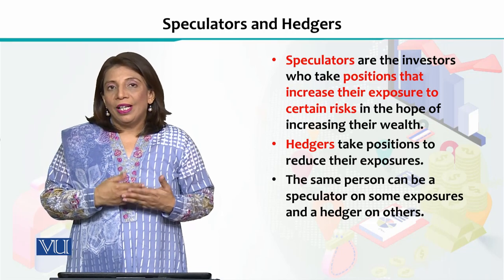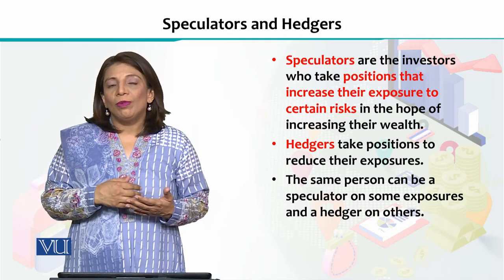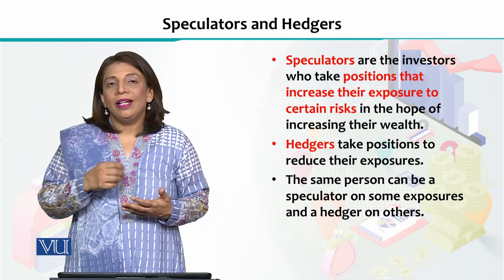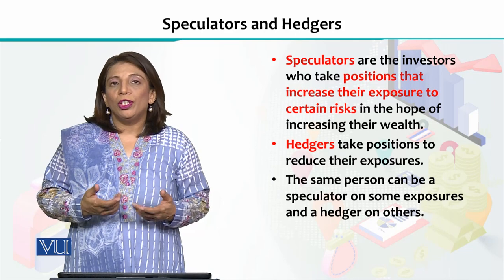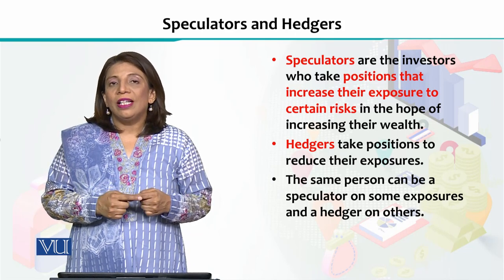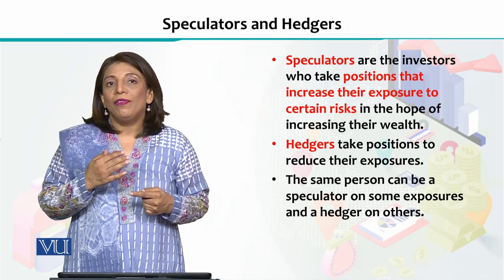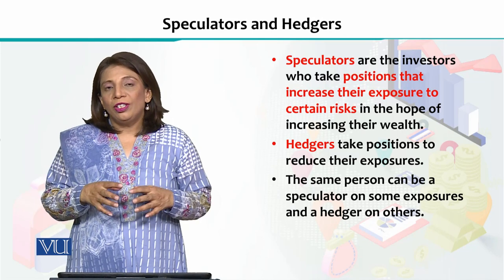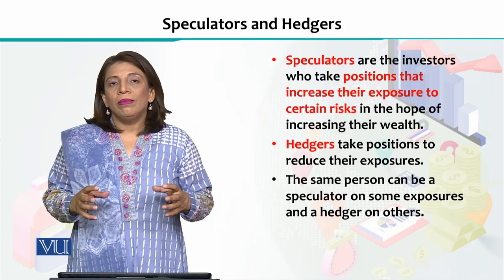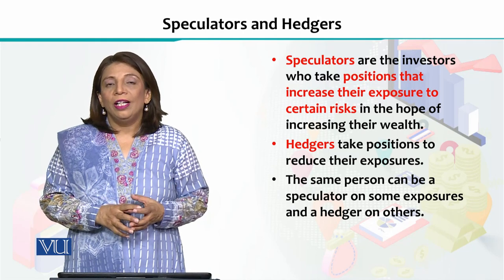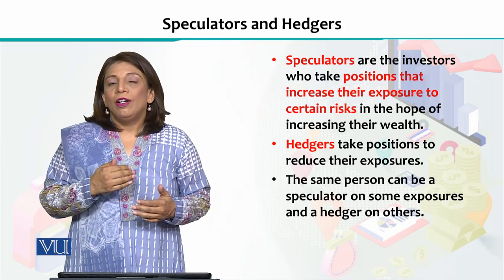Why would we want to take on more risk? Speculators always take positions and make investments that increase their risk exposure. The reason is that risk has a very strong connection with return — if you want a high return, you must take a high level of risk. So speculators and hedgers are two main categories into which we can classify all financial investors. Speculators are the type of investors who take positions that increase risk exposure.